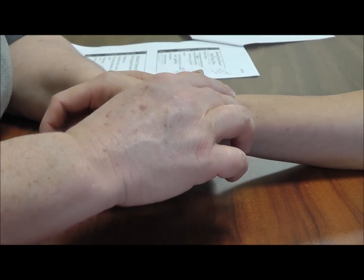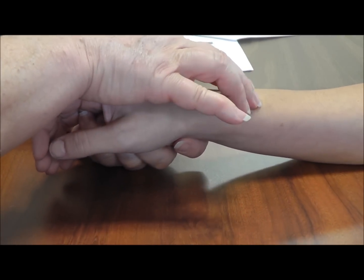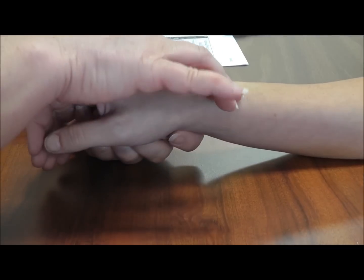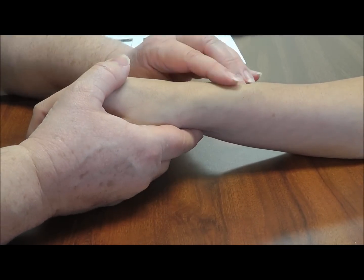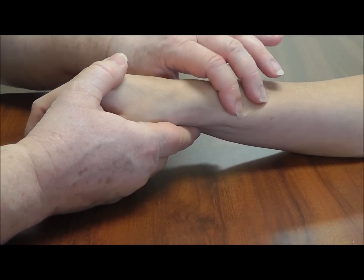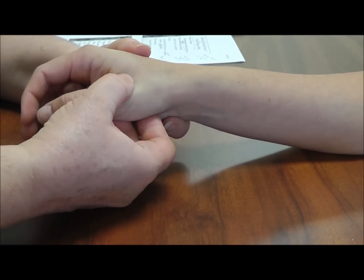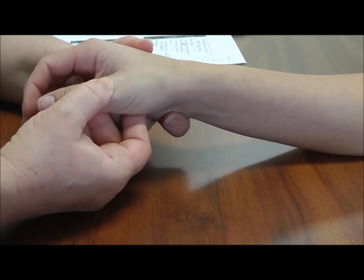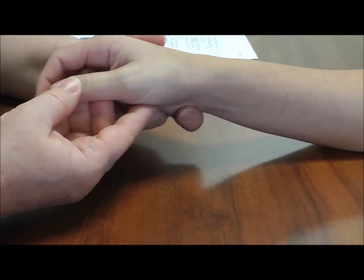You can also palpate the distal part of the muscle and especially someone thin like her you can feel where the first and second dorsal compartment cross over each other here. Then you can palpate all the way down to those distal insertions of those tendons.